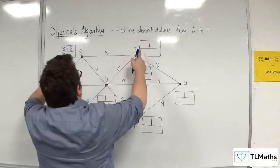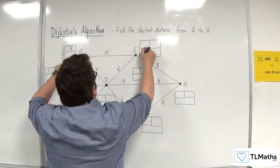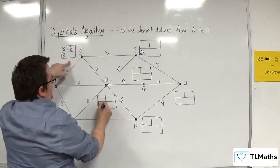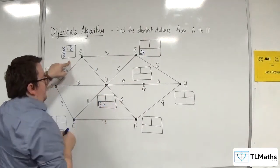Now, 8 plus 15 is 23, so that goes in there, and 8 plus 7 is 15, which is better than 18, so I'll put comma 15.